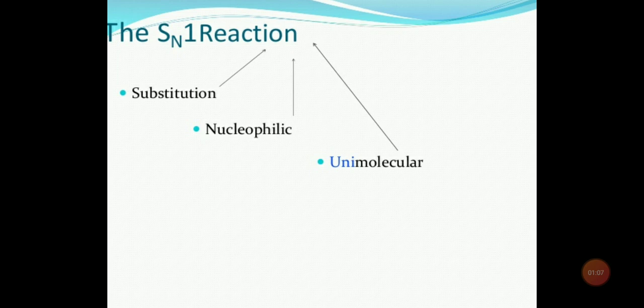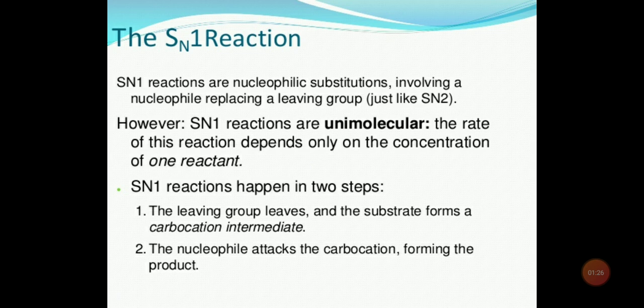In SN1, the leaving group will leave the reactant and the nucleophile will take the position of the leaving group. SN1 reactions are nucleophilic substitution reactions involving a nucleophile replacing a leaving group. SN1 reactions are unimolecular reactions, meaning the rate of reaction depends only on the concentration of one reactant.